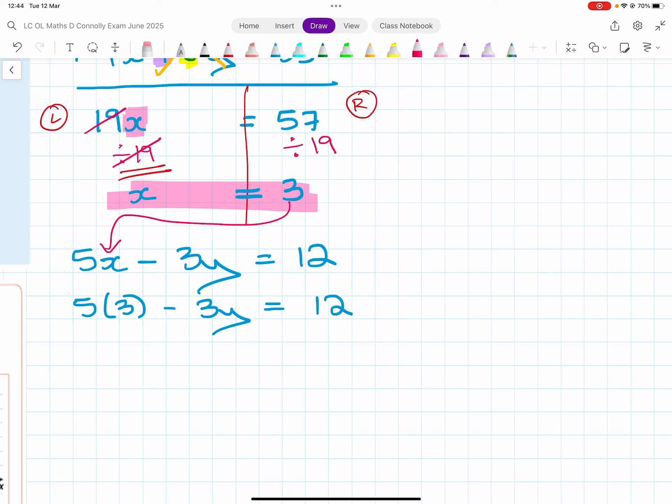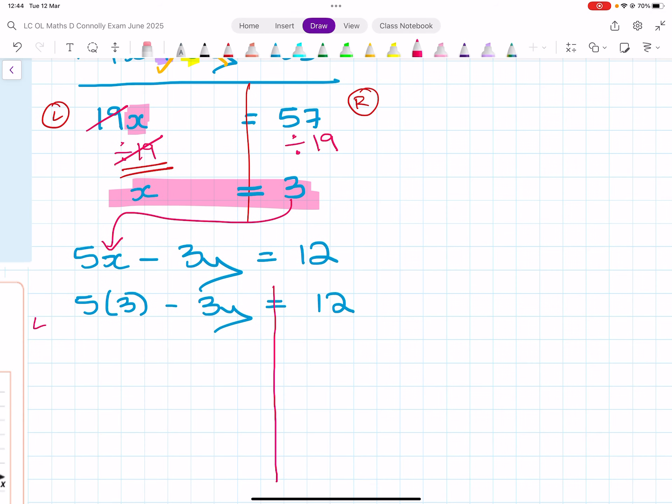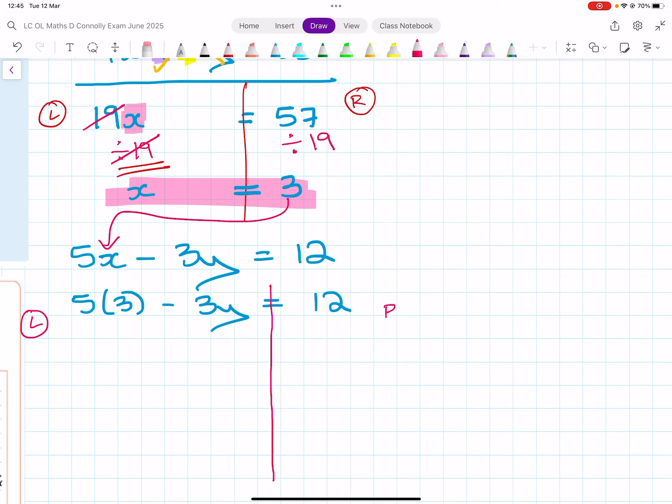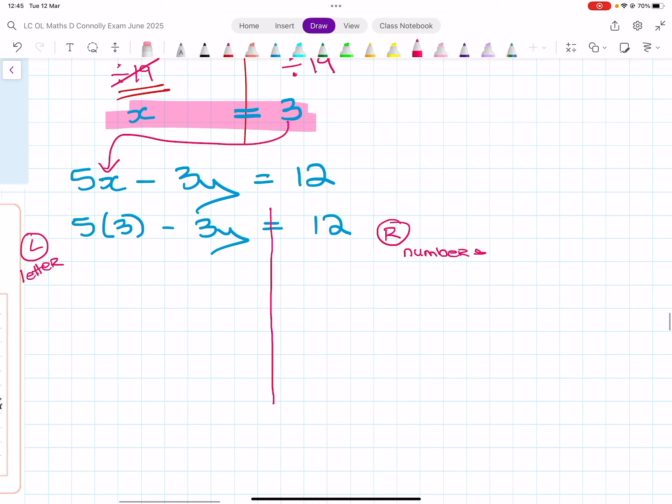Again, this is an equation. So I can identify my left hand side and my right hand side. I'm going to put my letters over here and I'm going to put my numbers over here. Okay, so this is 5 bracket 3, which is 5 times 3, which is 15 minus 3y equals 12.